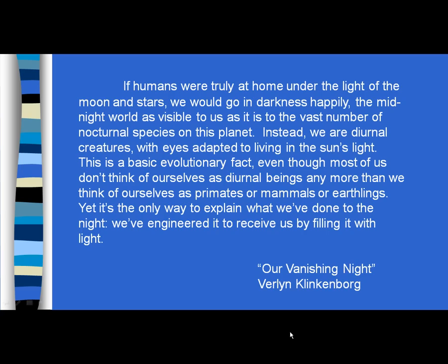For example: 'If humans were truly at home under the light of the moon and stars, we would go in darkness happily, the midnight world as visible to us as it is to the vast number of nocturnal species on this planet. Instead, we are diurnal creatures with eyes adapted to living in the sun's light. This is a basic evolutionary fact, even though most of us don't think of ourselves as diurnal beings any more than we think of ourselves as primates or mammals or earthlings. Yet it's the only way to explain what we've done to the night — we've engineered it to receive us by filling it with light.' In this example, the author imagines a world where humans are nocturnal, but then moves from this general idea to a specific, sharpened thesis: that even though humans are not nocturnal, we have figured out ways to live comfortably in the dark.